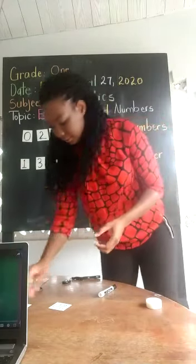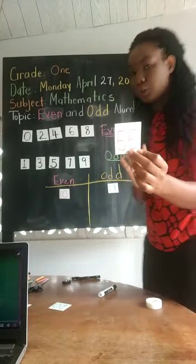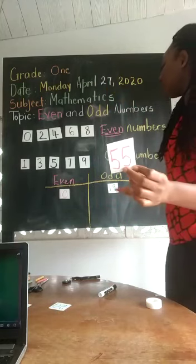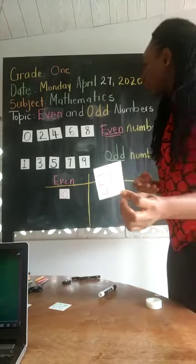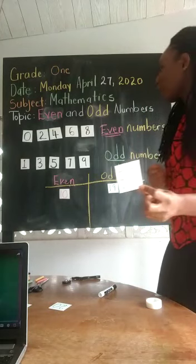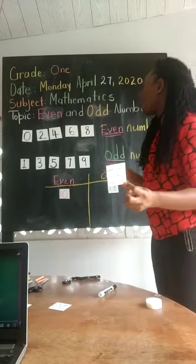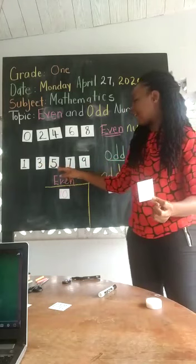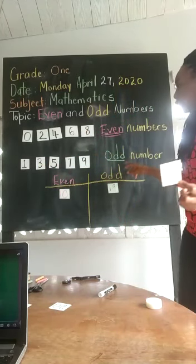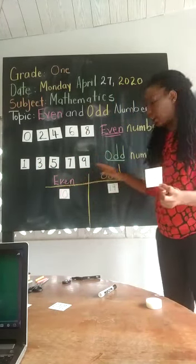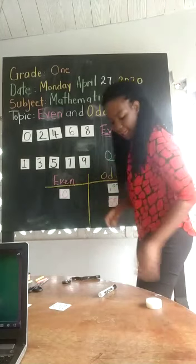Now one last one: 55. In 55 we have two fives. To figure out if 55 is even or odd, we look at the number in the ones place — that's a five. Is five an even number? No, five is an odd number. So where do we put 55? We put it on the odd side.